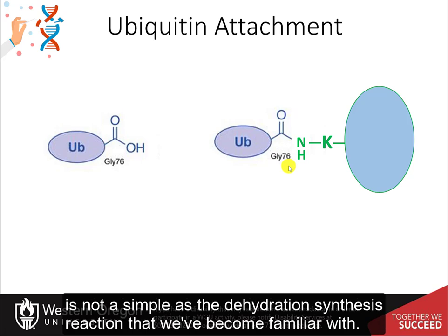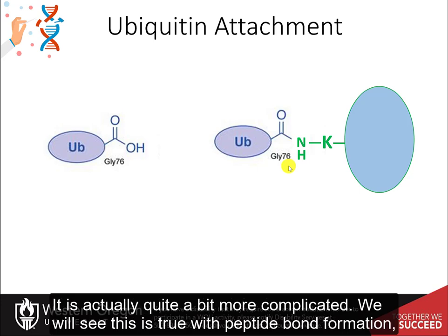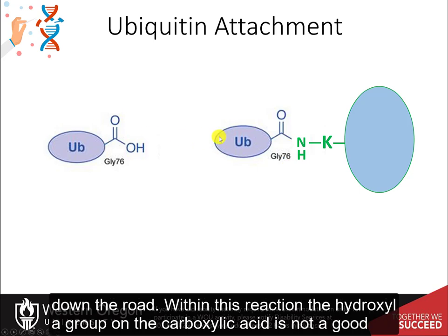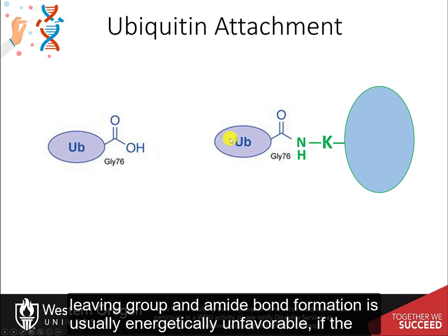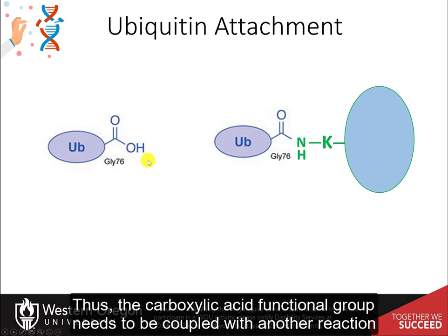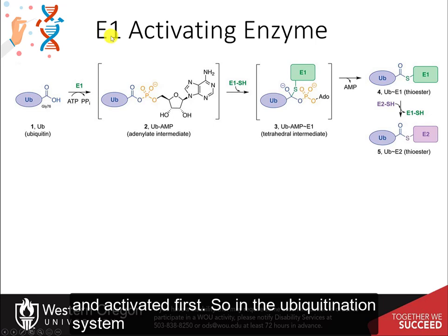Amide formation in vivo is not as simple as the dehydration synthesis reaction that we have become familiar with; it is actually quite a bit more complicated. We will see this is true with peptide bond formation as well, when we dive into the structure and function of the ribosome in a few chapters down the road. Within this reaction, the hydroxyl group on the carboxylic acid is not a good leaving group, and amide bond formation is usually energetically unfavorable if the hydroxide group has to be the leaving group. Thus, the carboxylic acid functional group needs to be coupled with another reaction and activated first.